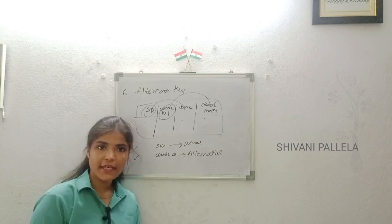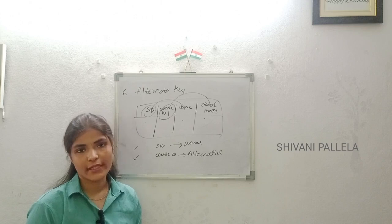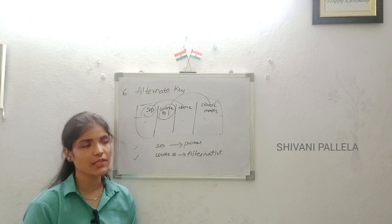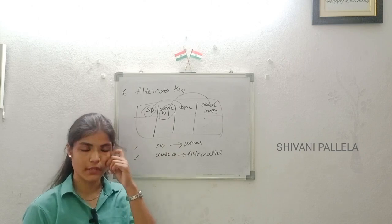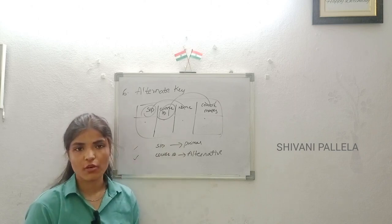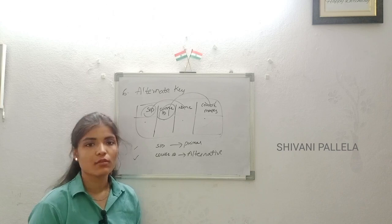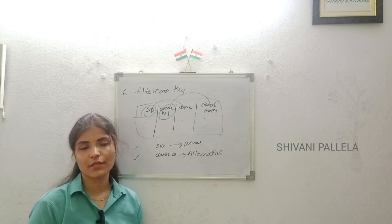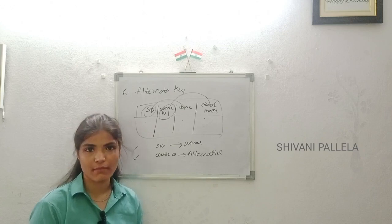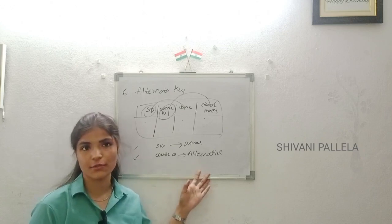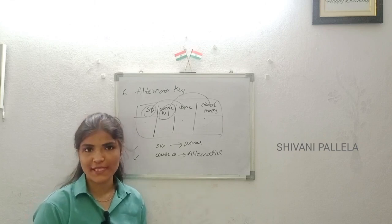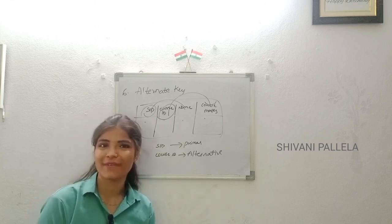So the six types of keys in RDBMS are: primary key, foreign key, super key, candidate key, composite key, and alternate key. If you understand these key concepts, you will find the normalization topic much easier. If you like this video, please like, share, and subscribe to the channel. In upcoming videos we will discuss the normalization topic. See you in the next video, bye.